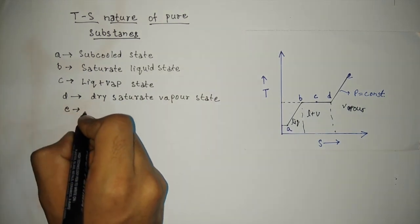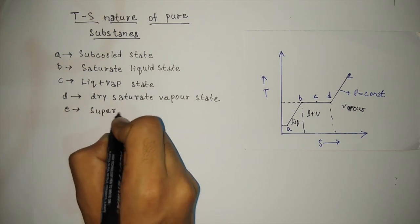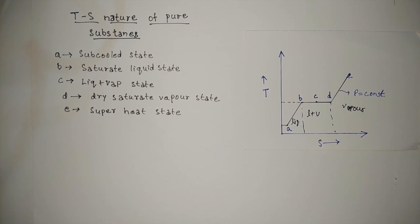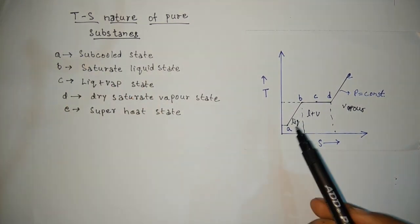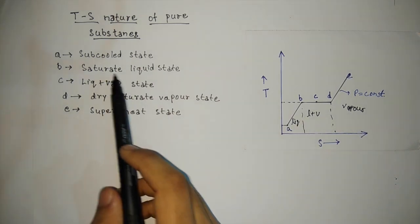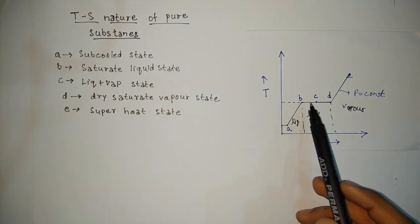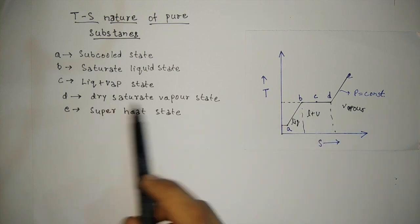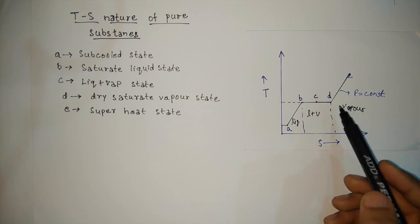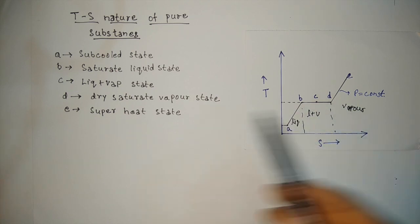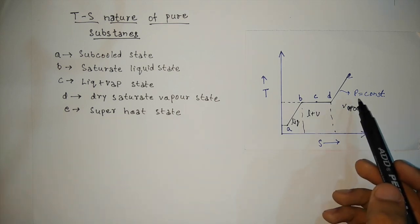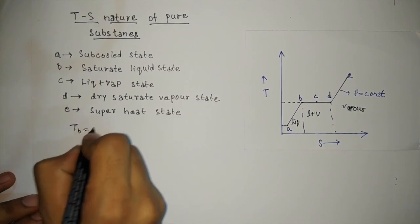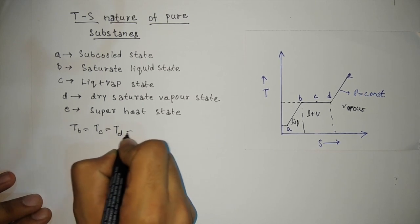Point C is defined as the liquid plus vapor state. Point D is defined as the dry saturated vapor state — the point from which the liquid completely transforms into vapor. Point E is defined as the superheated state — the final state of the vapor. To summarize: point B is saturated liquid state where liquid starts changing to vapor; point C is liquid plus vapor state where both coexist; point D is dry saturated vapor state where liquid completely converts to vapor; and point E is the superheated state.